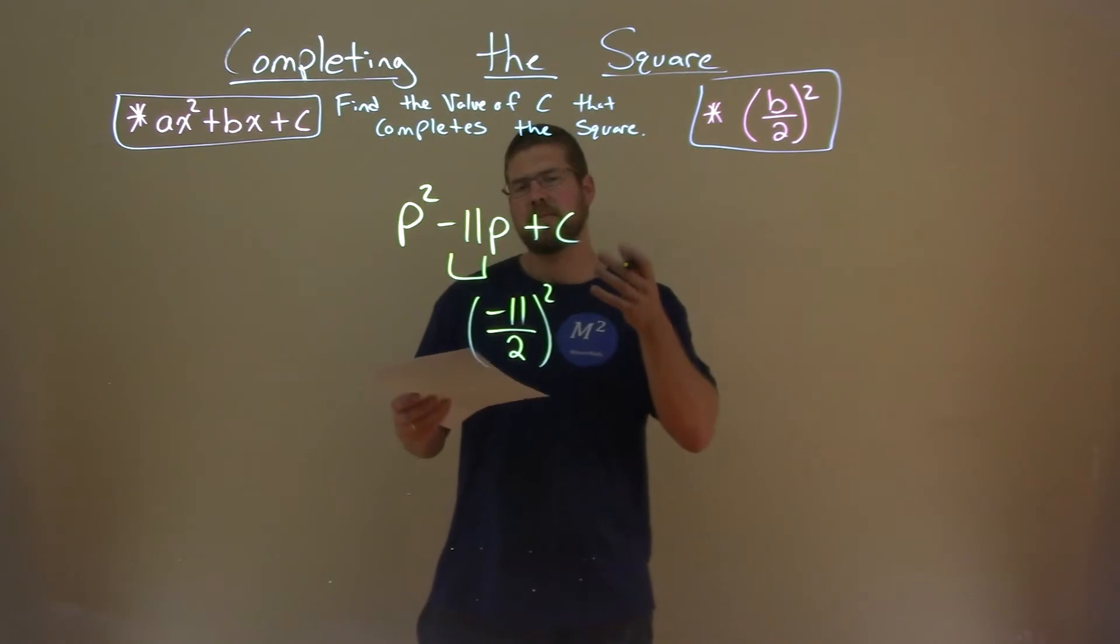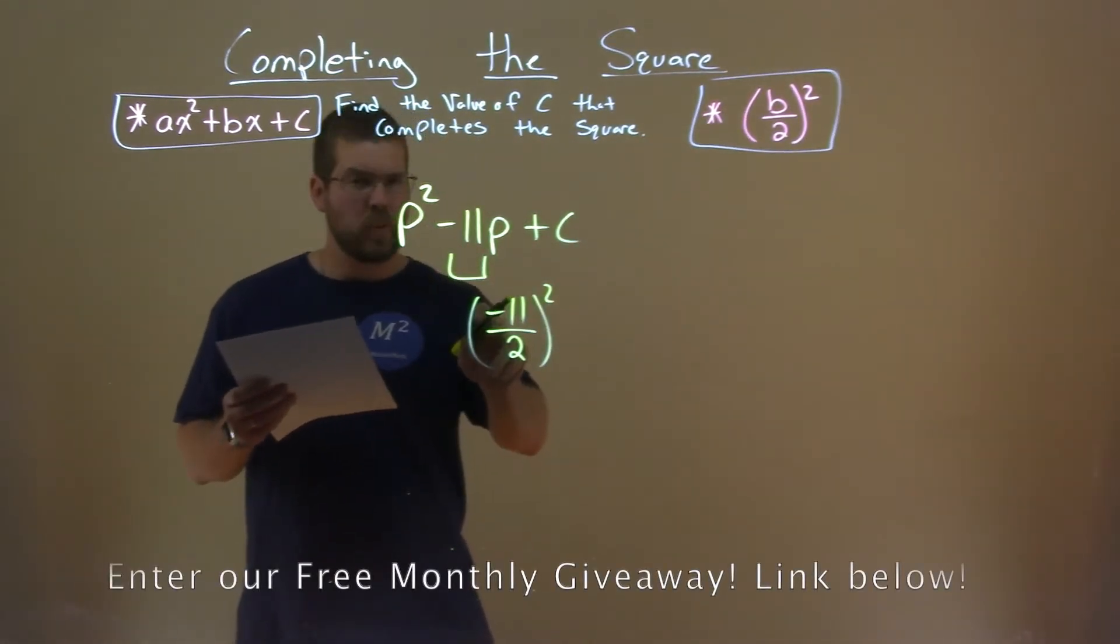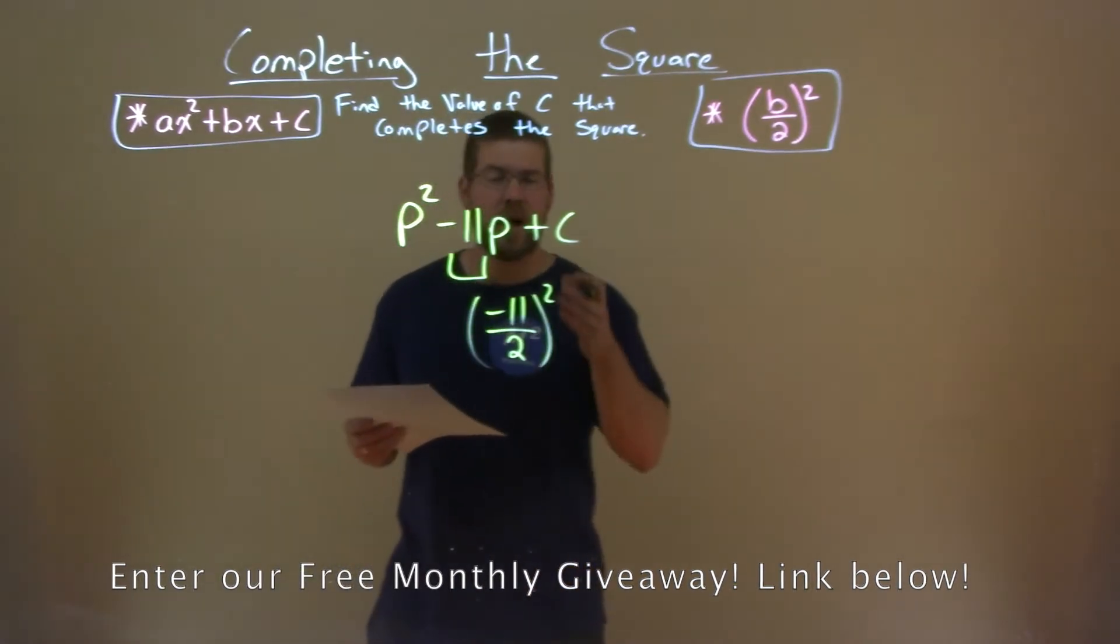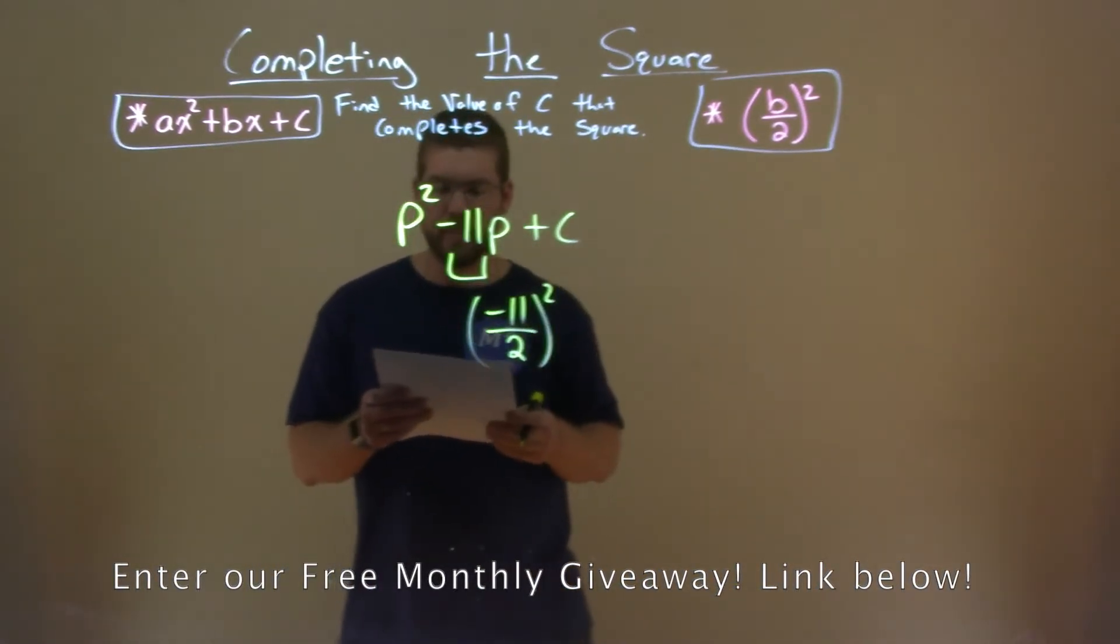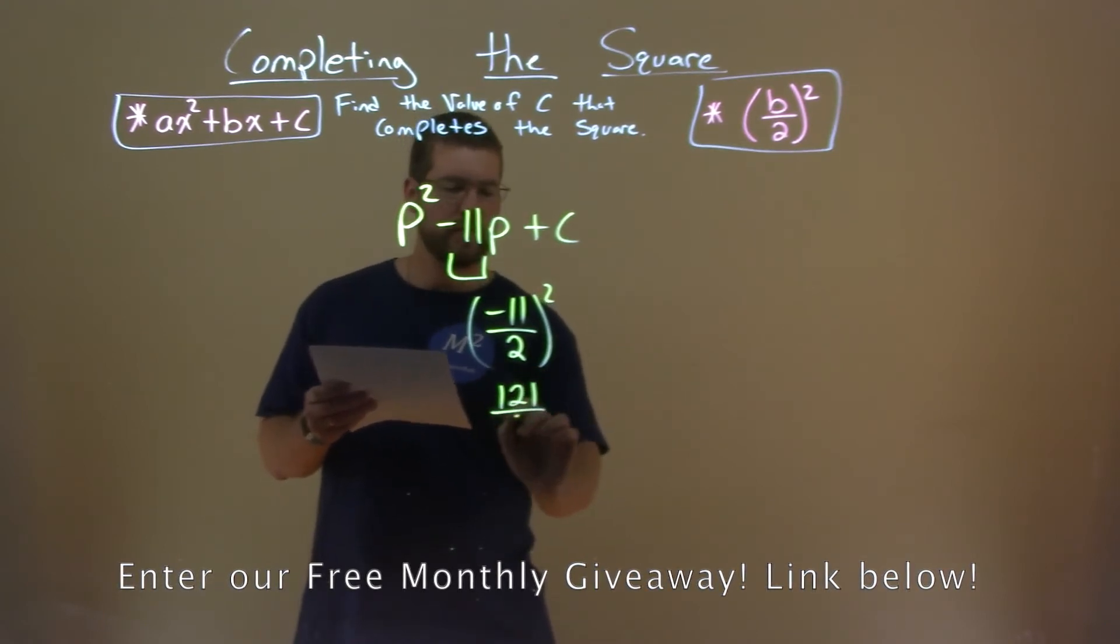Well, negative 11 divided by 2 squared, well, a negative squared is a positive, so now we just square the numerator and the denominator. 11 squared is 121, 2 squared is a 4.